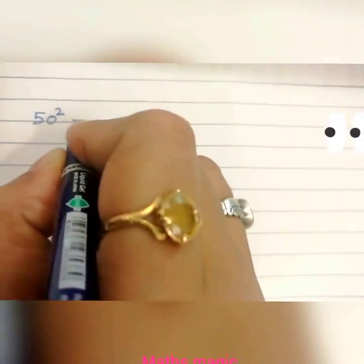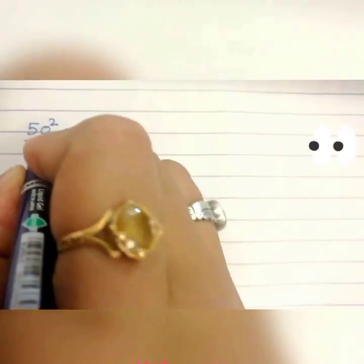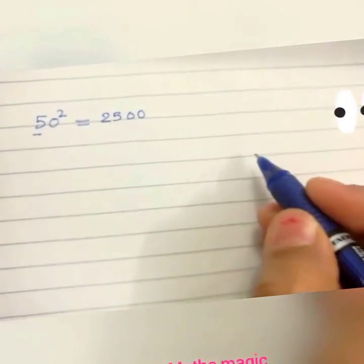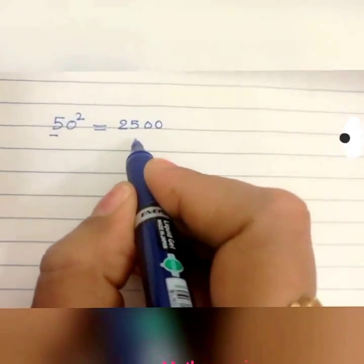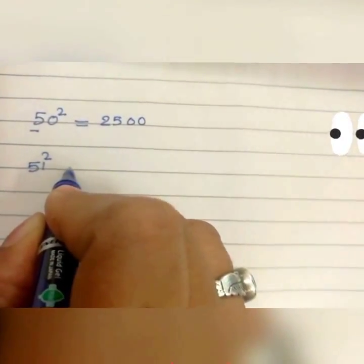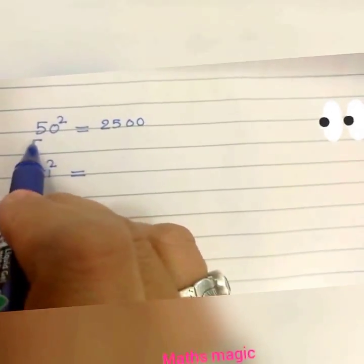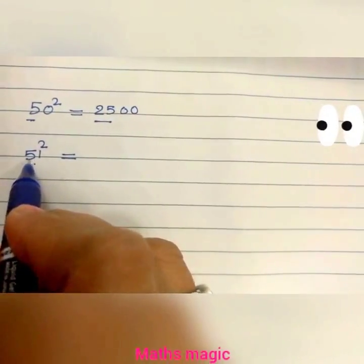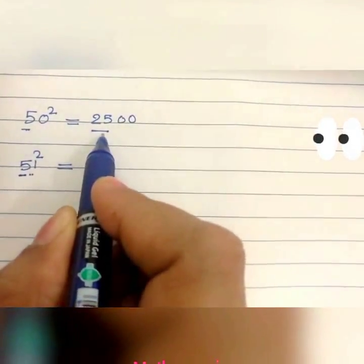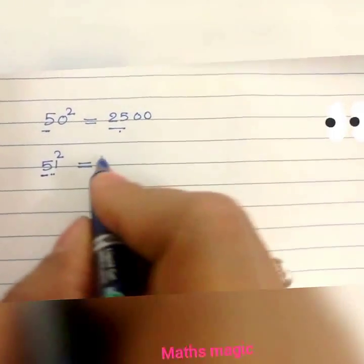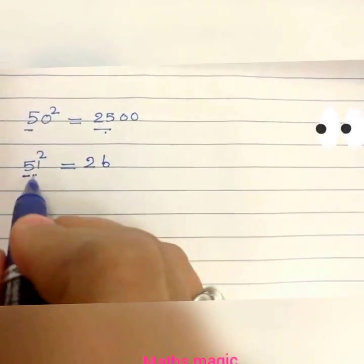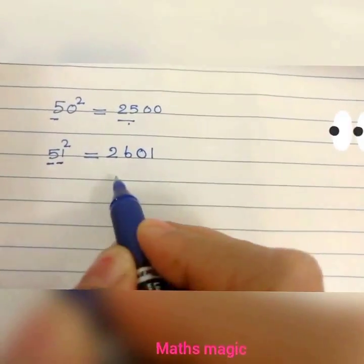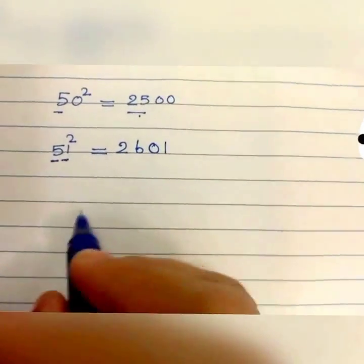We know 50 squared: 5 squared is 25, followed by two zeros, so 50 squared is 2500. Now let us find 51 squared. 51 is 50 plus 1, so we take 5 squared, which is 25, and add 1: 25 plus 1 is 26. Then take the square of 1, which is 1, written as a 2-digit number: 01. So 51 squared is 2601.